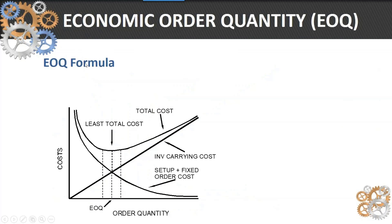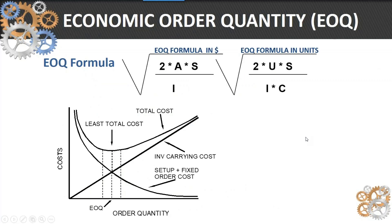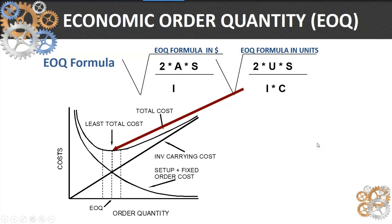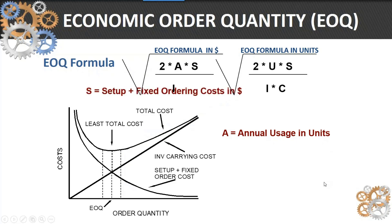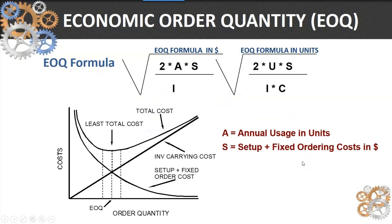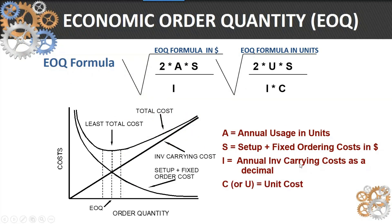So if you look at this, you don't want to graph every part that you've got. We've got a couple of formulas that allow us to do this. We can calculate EOQ in terms of the dollar value of the order, or economic order quantity in terms of units — both representing the least total cost. This is the annual usage in units, this is the setup or fixed ordering costs in dollars, I is the carrying cost, and C is the unit cost. That's how we would calculate the economic order quantity.